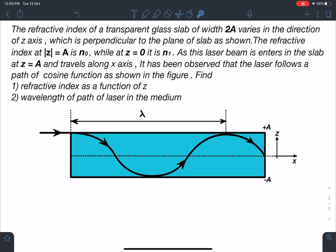It is given this is the cross section of the slab and light ray or laser beam is entering along this line here at z equal to a and then it takes a path like this which is a cosine function. So we have to find out refractive index of such slab as a function of z and also the wavelength of this path of laser, that means distance between these two peaks.